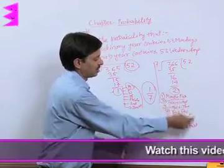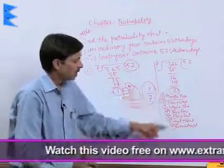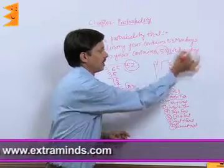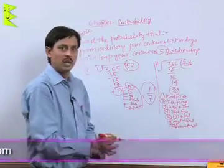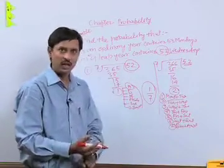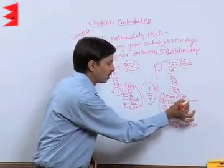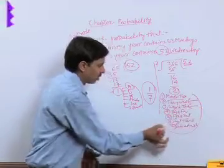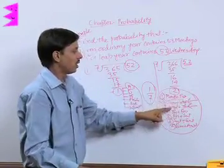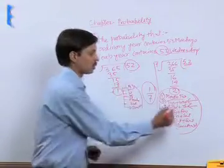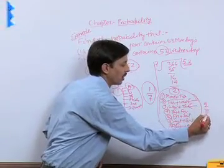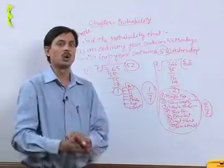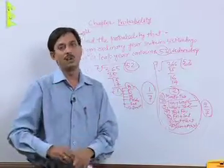We are looking for 53 Wednesdays. There are already 52 complete Wednesdays. Wednesday appears in two of the seven pairs: Tuesday–Wednesday and Wednesday–Thursday. So out of seven cases, Wednesday appears at two positions. Therefore, the probability of getting 53 Wednesdays in a leap year is 2 by 7. Using this approach, you can solve any such probability question.